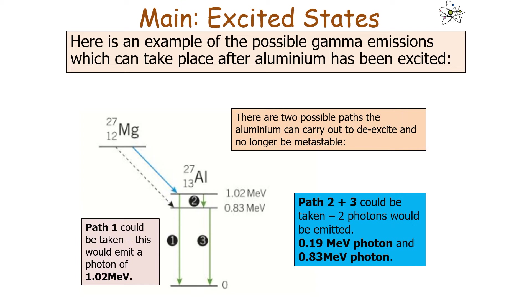Path 1, as shown on the diagram on the screen, indicates that it could emit one full photon of 1.02 mega electron volts. You could also produce two photons, one of 0.19 mega electron volts and one of 0.83 mega electron volts. In the first pathway you produce one photon but in the second pathway you produce two photons.